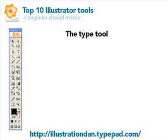Welcome to part four of the top ten Illustrator tools a beginner should master. In our last tutorial I showed you an intro into the pen tool and its different functions. Now we're going to focus on the type tool. The type tool has many options, so I will explain the basic functions of the tool — the functions you'll probably be using the most. I will not explain certain features, as my goal is for you to start using Illustrator right away without learning every single aspect of the software.